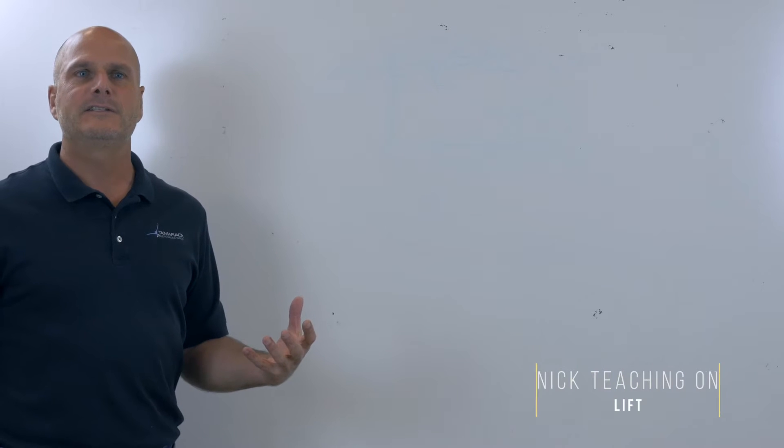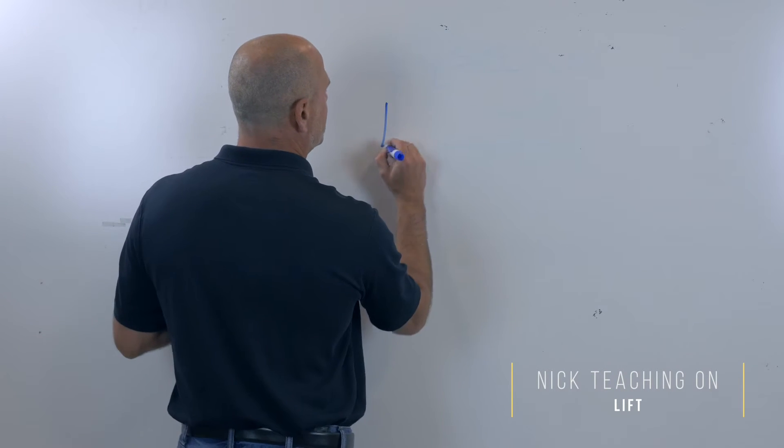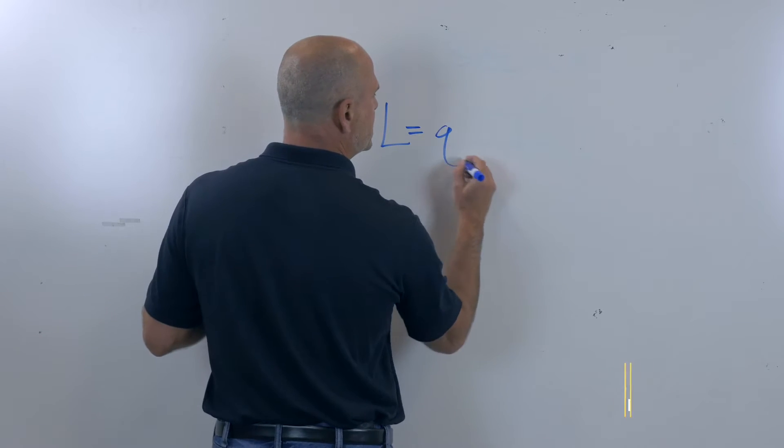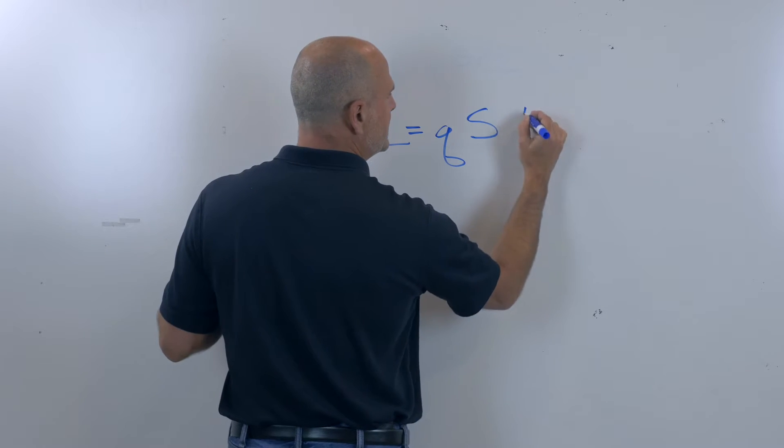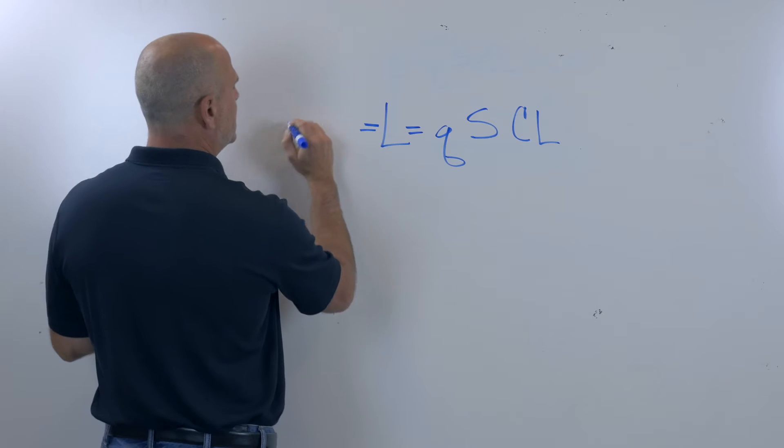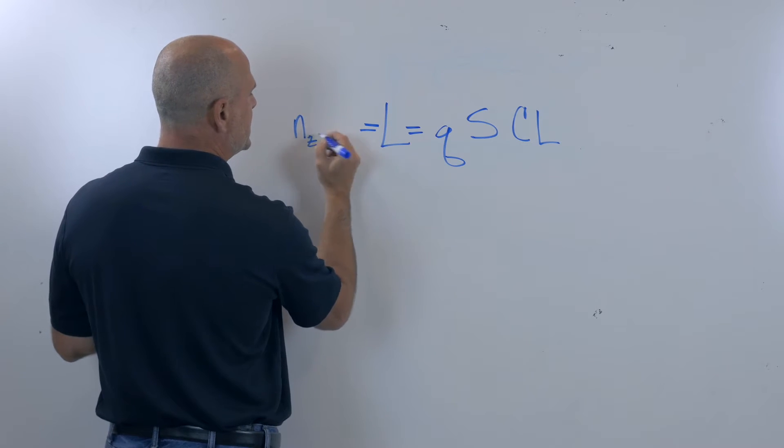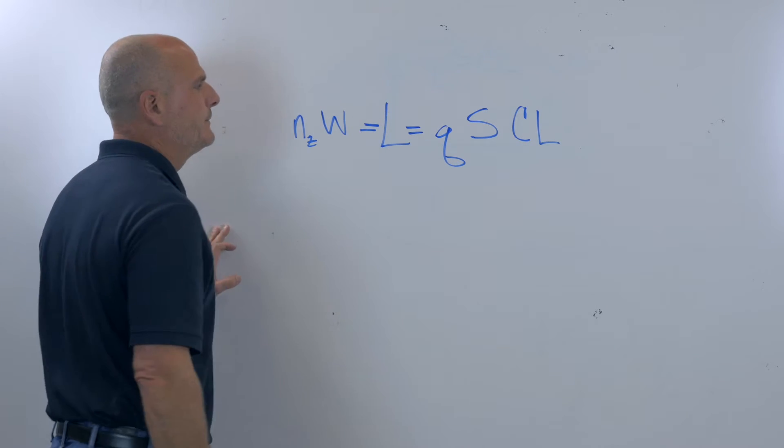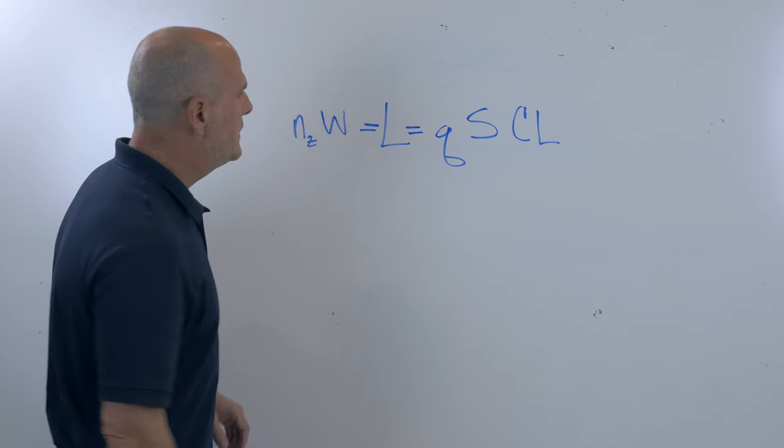In the most basic terms, lift equals dynamic pressure times surface area times the lift coefficient, which also equals the load factor the airplane is under times the weight of the airplane. So lift is QSCL.